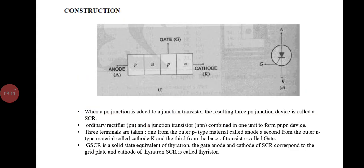Looking at the construction, this is the SCR construction. When a P-N junction is added to a P-N-P transistor, the resulting three P-N junctions form the SCR. There are three terminals: one from the outer P-type material called the anode, one from the outer N-type material called the cathode, and one from the base of the transistor called the gate. The gate, anode and cathode of the SCR correspond to the grid, plate and cathode of a thyratron tube.